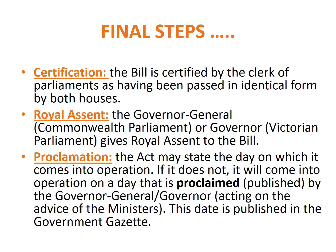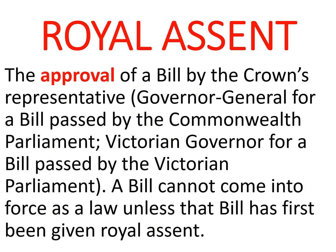Assuming a bill has been passed by both houses in the same form, there are a few final steps before it can become a law. First, the bill must be certified by the Clerk of Parliament — an officer of Parliament — as having been passed in identical form by both houses. Second, the Governor-General (for a bill passed by the Commonwealth Parliament) or the Victorian Governor (for a bill passed by the Victorian Parliament) must give royal assent to the bill. Royal assent is the approval of the bill by the Crown's representative, given by signing the bill.